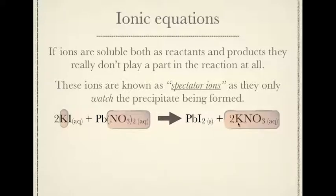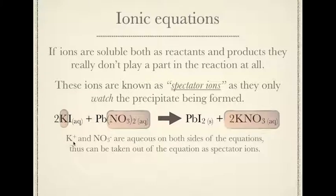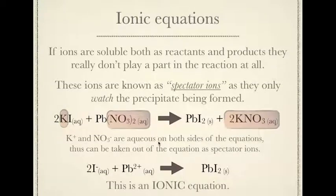What we do, take the spectator ions out. K+ and NO3- are aqueous on both sides of the equation, thus can be removed or taken out of the equation as spectator ions. And we re-write the equation, only showing the important things. That being, our two iodide ions and our one lead ion. These guys react together and they form our solid. This is an ionic equation. It has our spectator ions removed.